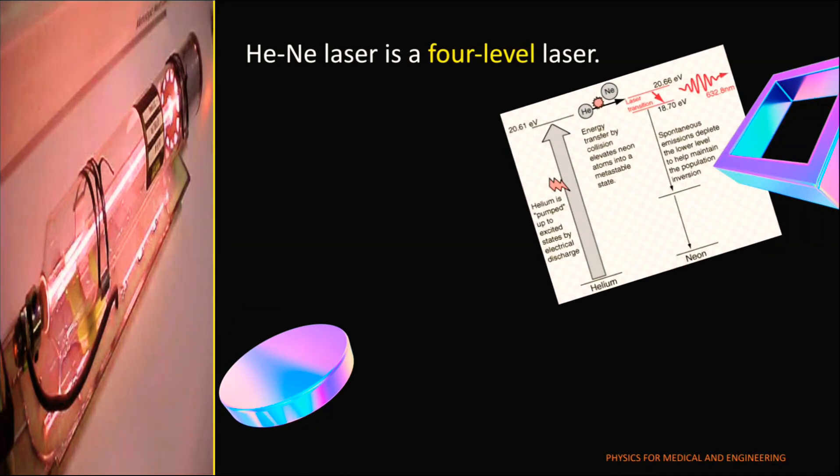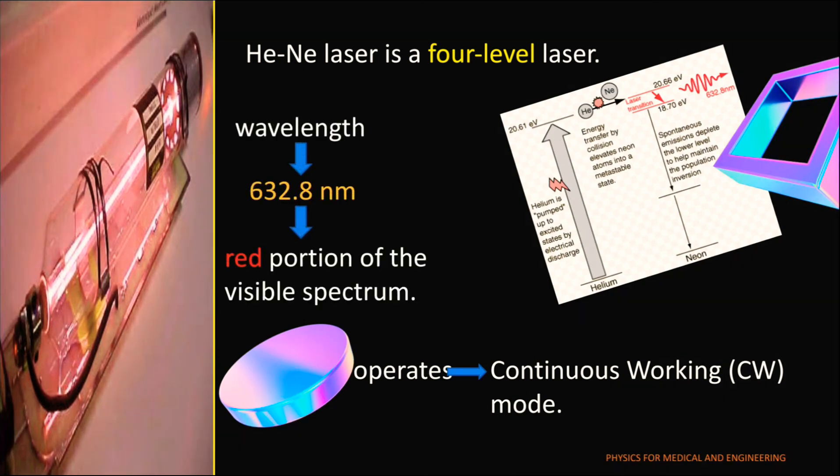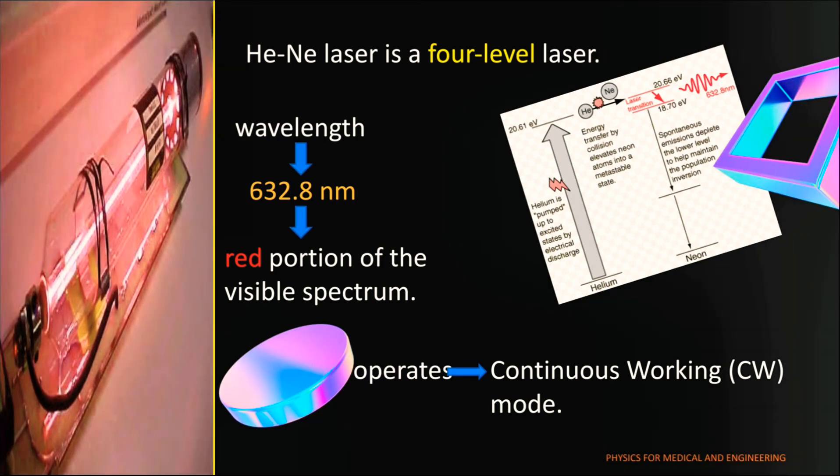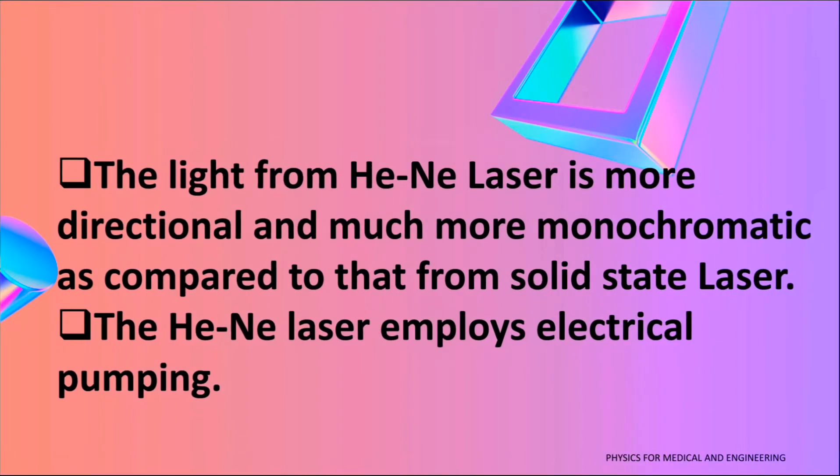Helium neon laser is a four optical laser and it operates in continuous working mode. Its visual operation wavelength is 632.8 nanometer in the red portion of the visible spectrum. The light from helium neon laser is more directional and much more monochromatic as compared to that from solid state laser. The helium neon laser employs electrical pumping.